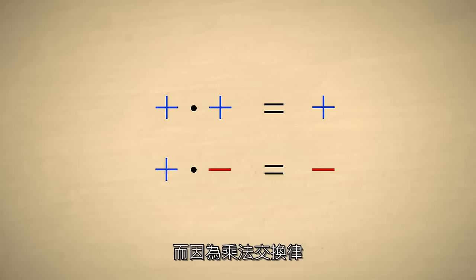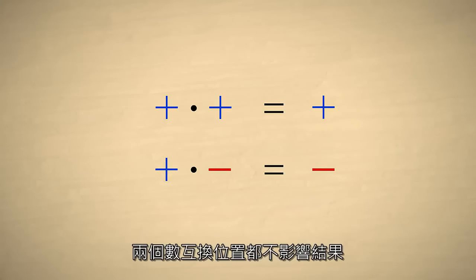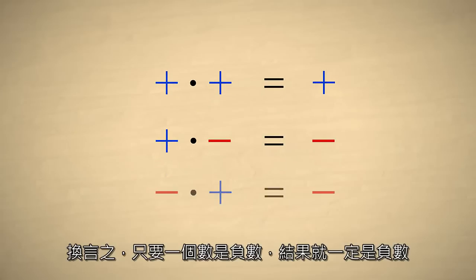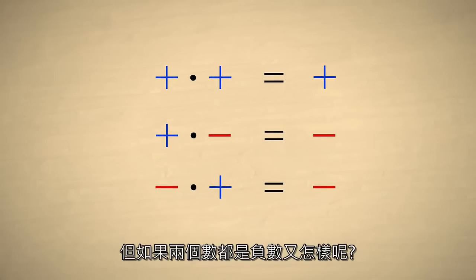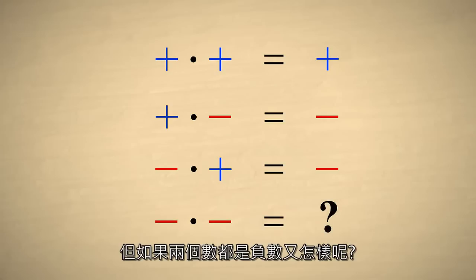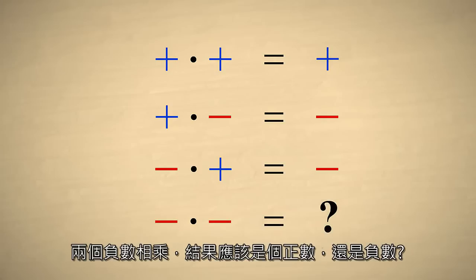Because of the commutative property of multiplication, we should be able to swap the operands and get the same result. So if either operand is negative, we must still get a negative result. But what if both operands are negative? If two negative numbers are multiplied, should the product be positive or negative?